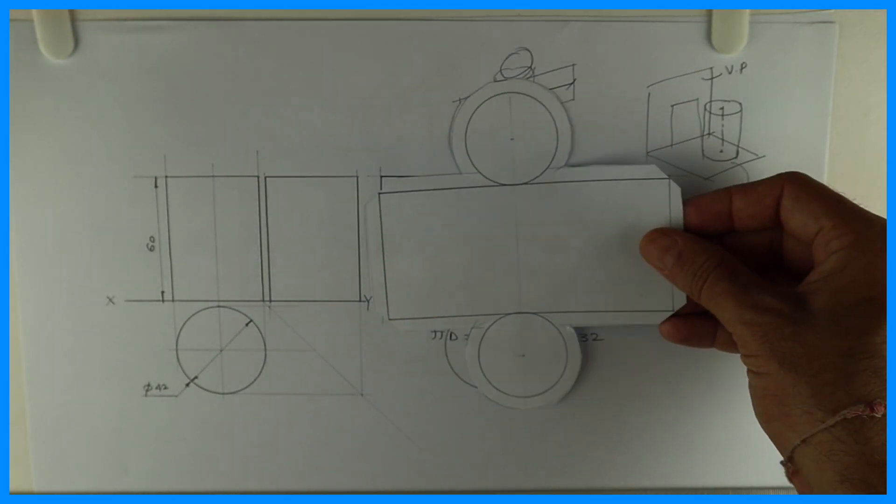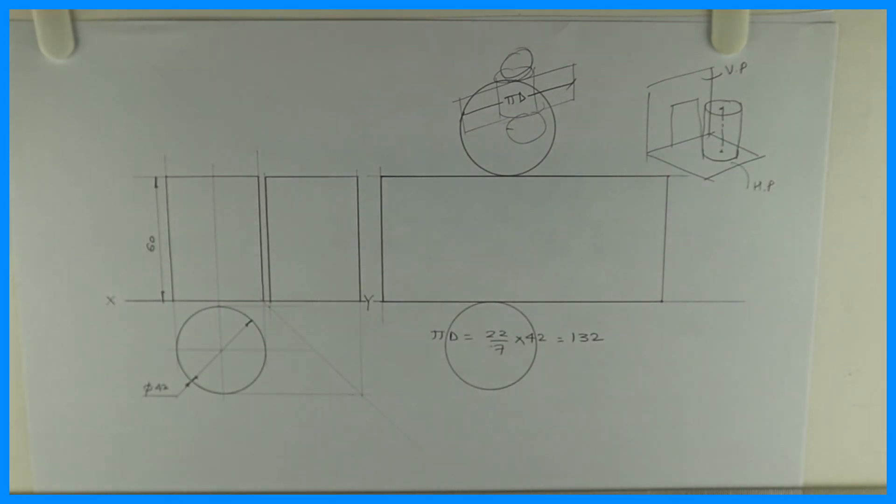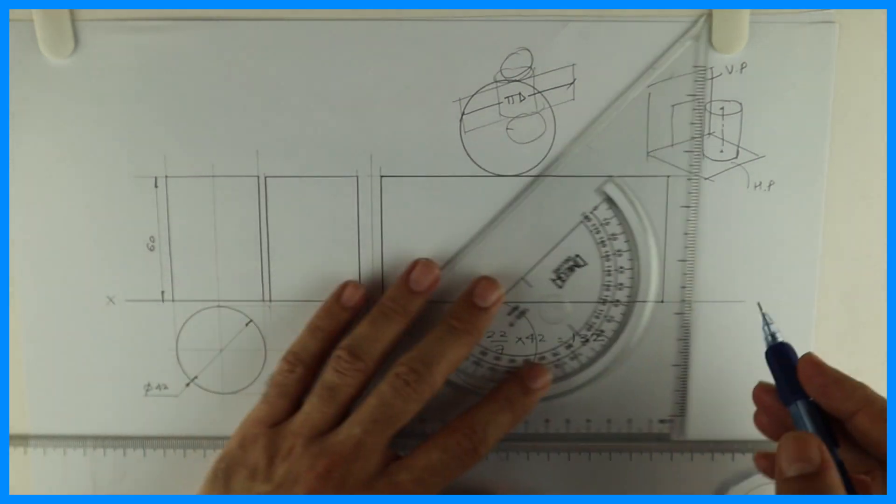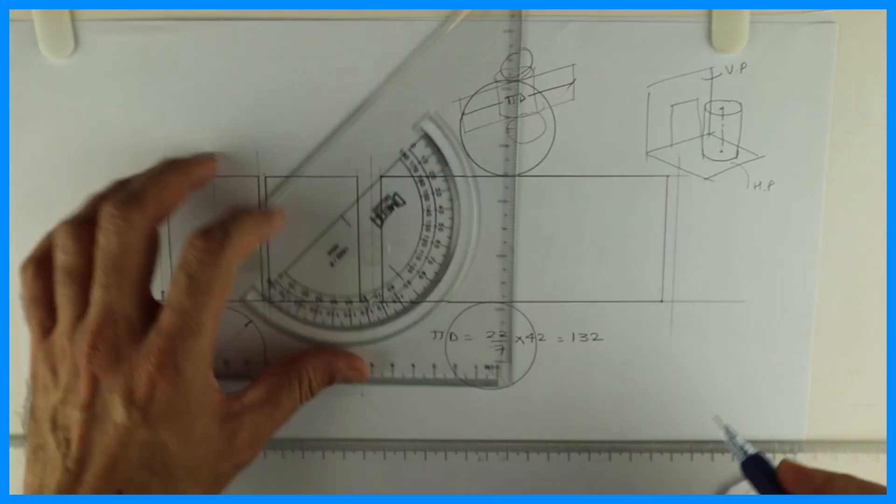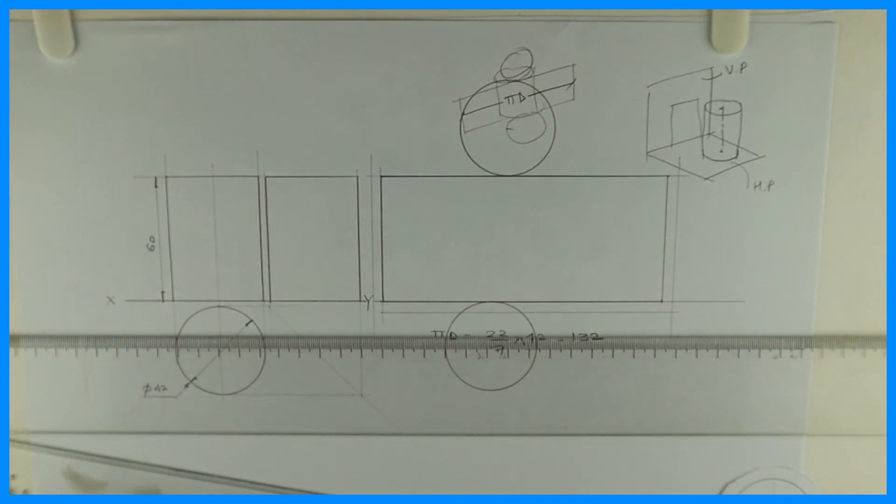Now we need to cut this like this, right? So for that what I need to do? I need to give width. See, give width to development, approximately 5 to 10 millimeter, whatever you like.